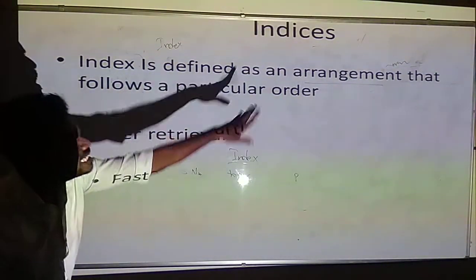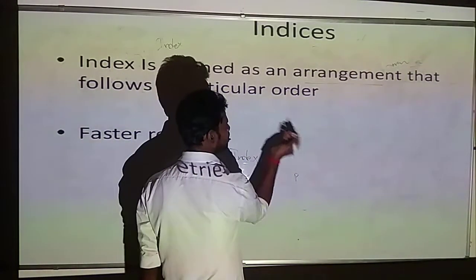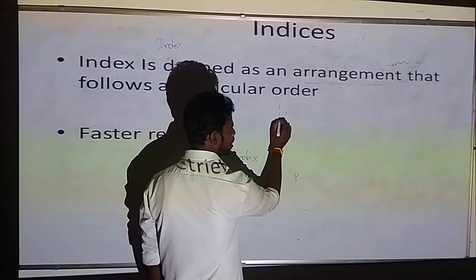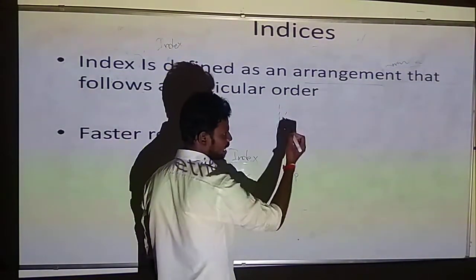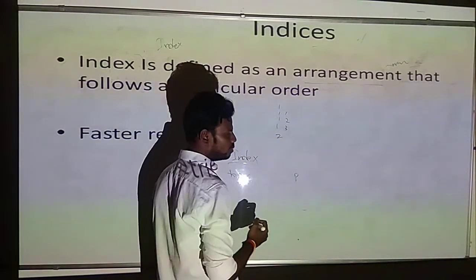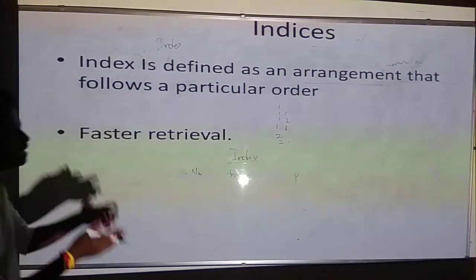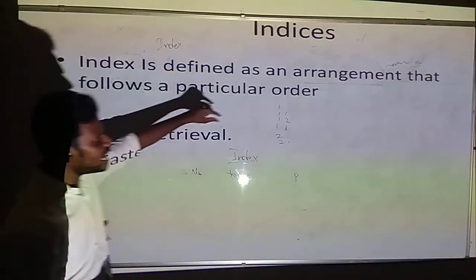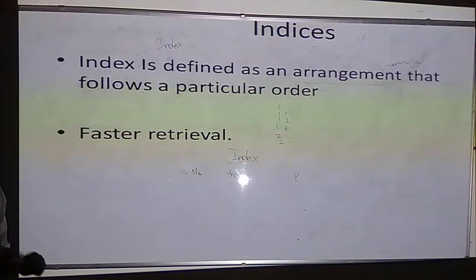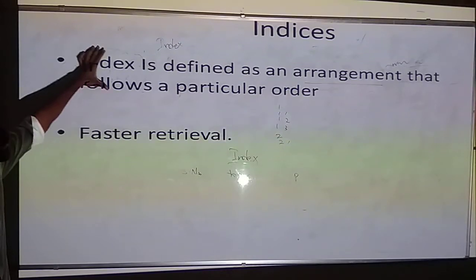Indices is defined as an arrangement that follows a particular order. For example, in your book you will have unit number 1 with topics 1.1, 1.2, 1.3 and so on. When it enters unit number 2, the topics change to 2.1, 2.2, 2.3 and so on. It is arranged in a particular order so that you can access those particular pages when required. In the same way, we will be arranging data in your database using the concept called indexes.